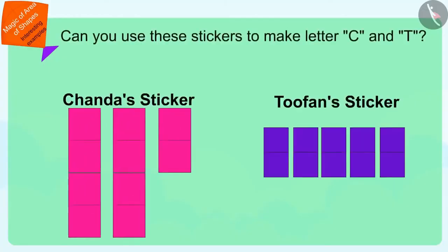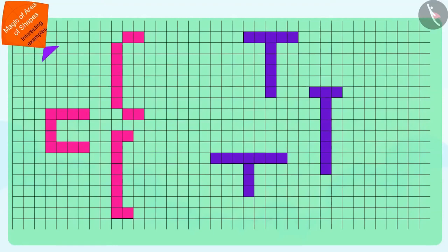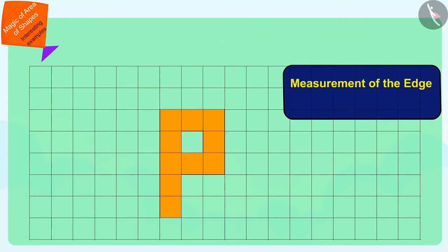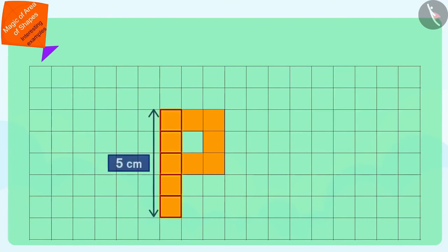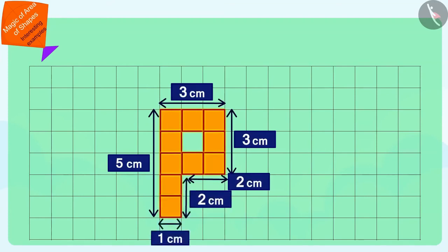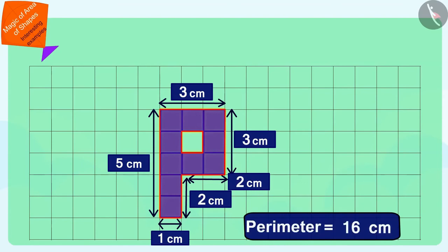Can you use these 10 square-shaped stickers to make Chanda's name letter C and Tufan's name letter T? Let us find the perimeter of P that Pinky created. The measurement of the edge of a square is 1 cm. To find the perimeter of this letter, we find the number of squares that fall on its edges and add the measurements of all those edges. In this way, the perimeter of Pinky's letter P is 16 cm.